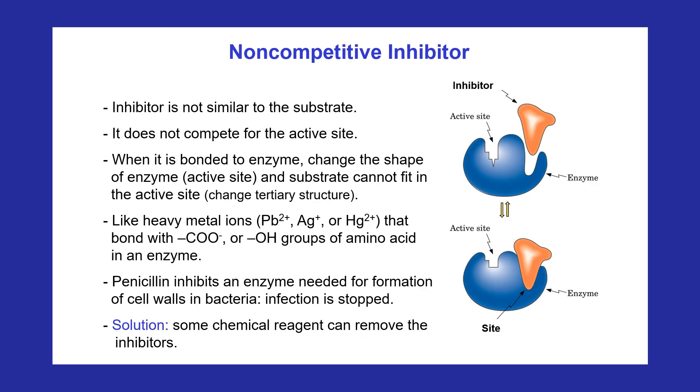The structure of a non-competitive inhibitor doesn't resemble the substrate and doesn't compete for the active site. Instead, a non-competitive inhibitor binds to a site on the enzyme that is not the active site. When the non-competitive inhibitor is bonded to the enzyme, the shape of the enzyme is distorted. Inhibition occurs because the substrate cannot fit in the active site or it doesn't fit properly. Without the proper alignment of substrate with the amino acid side groups, no catalysis can take place. Because a non-competitive inhibitor is not competing for the active site, the addition of more substrate doesn't reverse this type of inhibition.